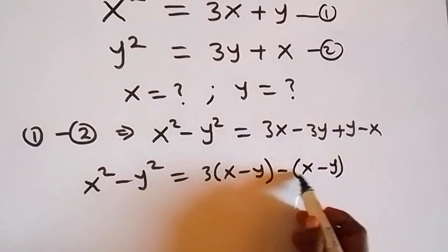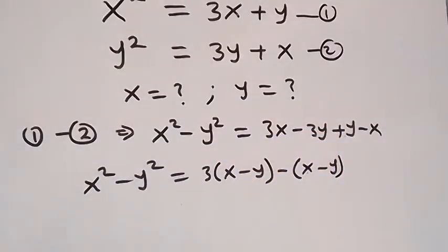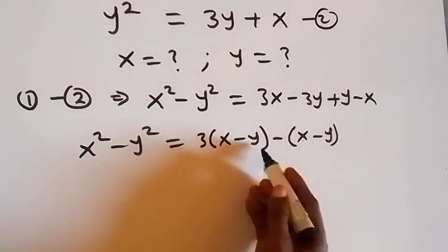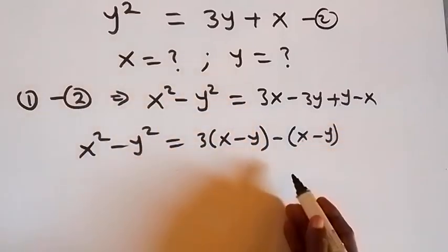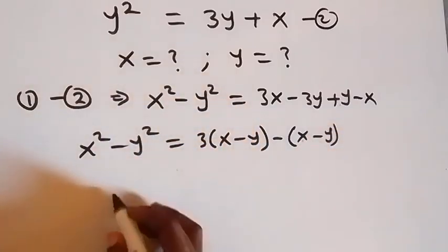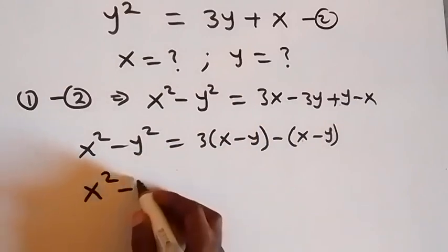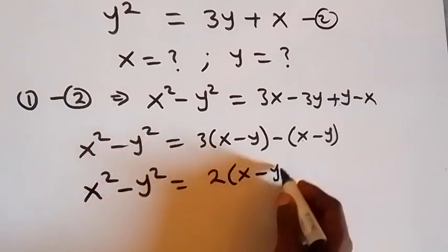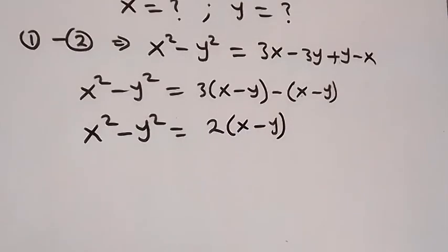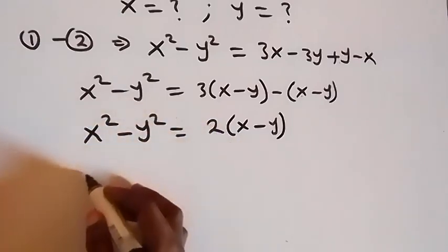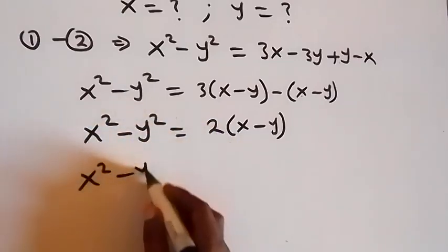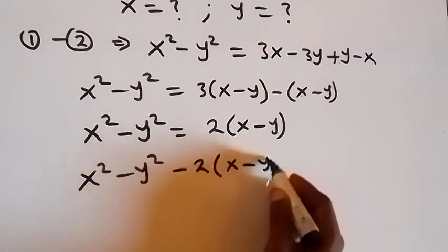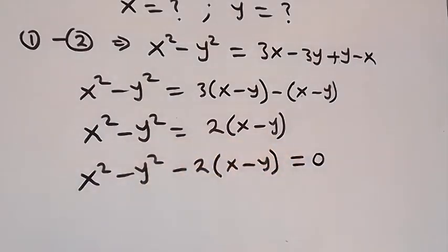That still gives us minus x plus y. So we have x minus y times 3, minus x minus y times 1, which gives us 2 into bracket x minus y. So x squared minus y squared equals 2 into bracket x minus y. Taking this to the left side: x squared minus y squared minus 2 into bracket x minus y equals 0.